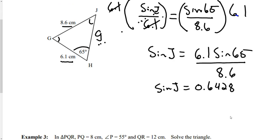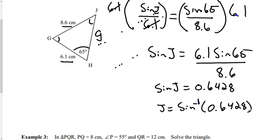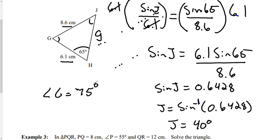Going to four decimal places when solving for an angle, I now need to find J, so J equals sine⁻¹ of 0.6428. Punching that into the calculator gives J equals 40 degrees. Now I have both J and H — they add up to 105 — so angle G equals 180 minus 40 minus 65, which is 75 degrees.